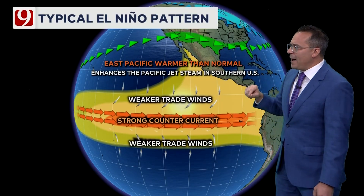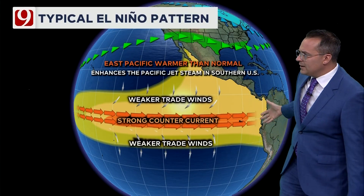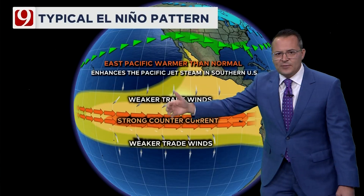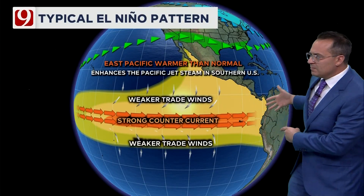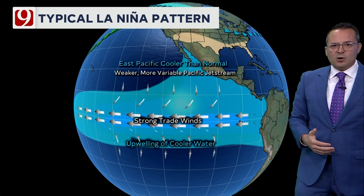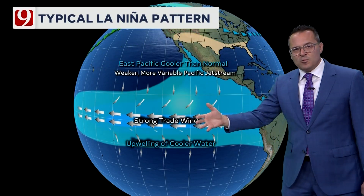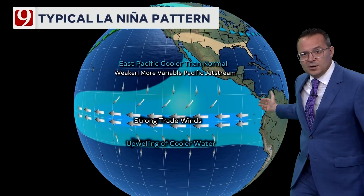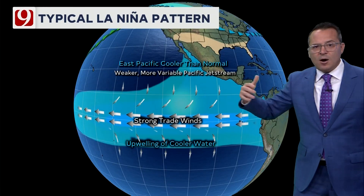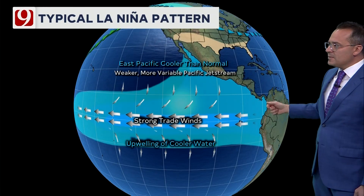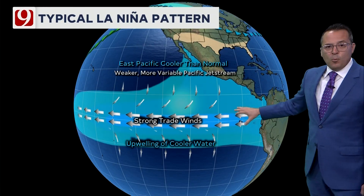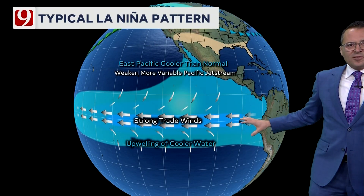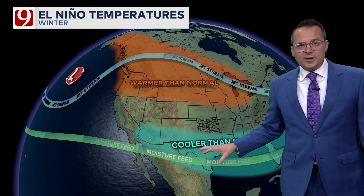Here's the typical El Niño pattern — the jet stream is to the north across the Pacific. Those strong currents and trade winds blowing from east to west are a little stronger. And the trade winds for La Niña are even stronger, blowing water from east to west and producing upwelling of colder waters.